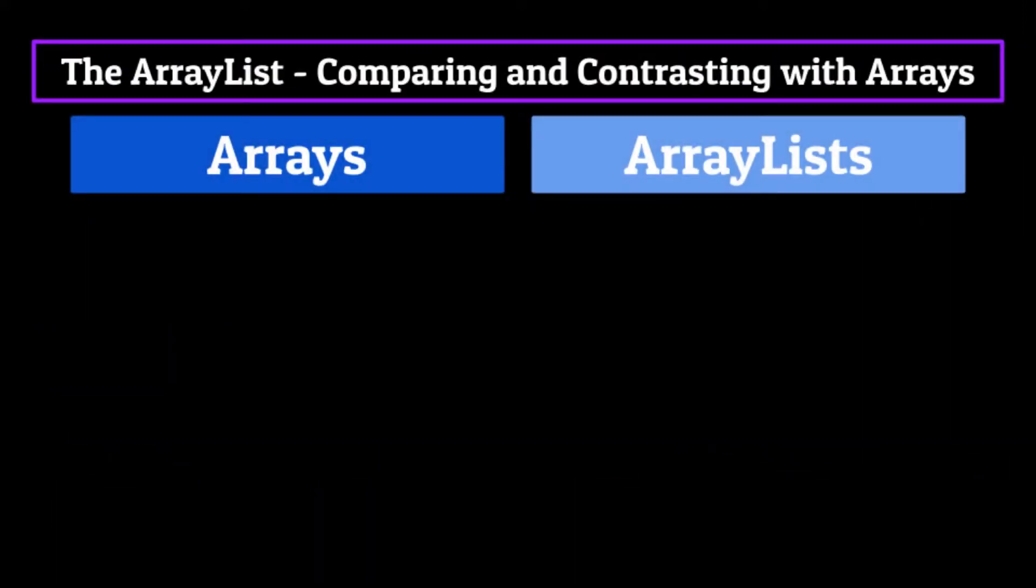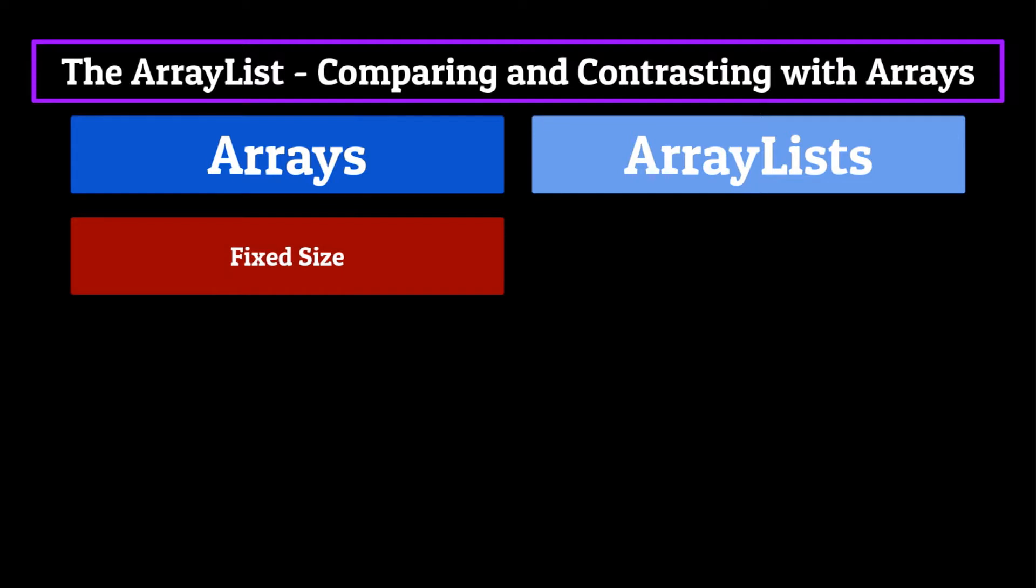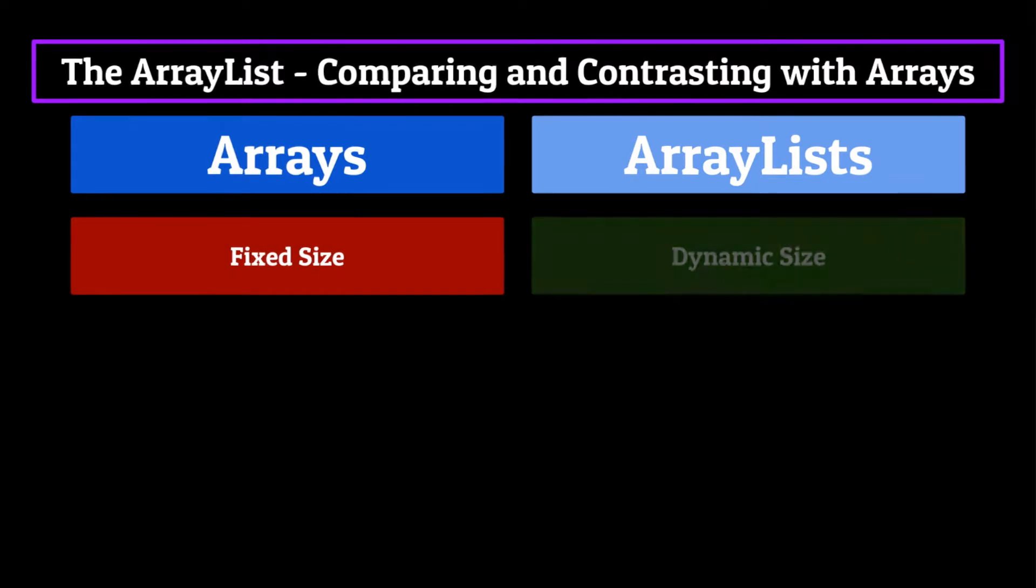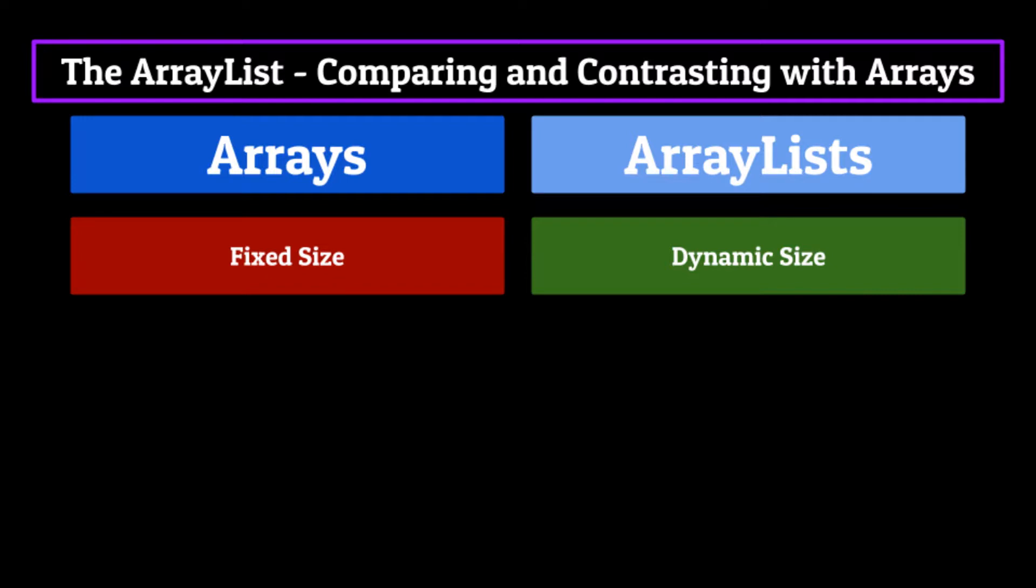Okay, first up, an Array is a collection with a fixed size, meaning it cannot be changed, whereas an ArrayList has a dynamic size, which can be updated to fit the needs of the programmer.